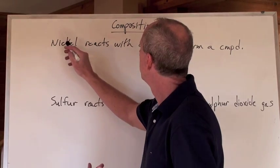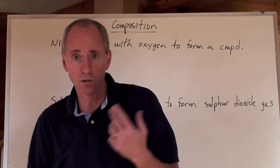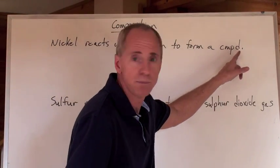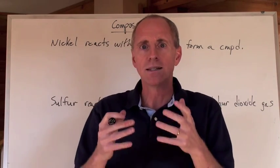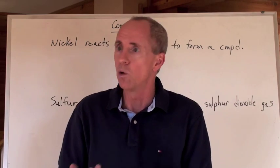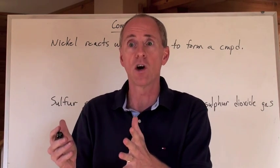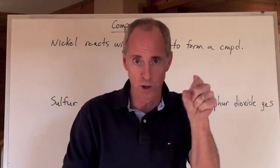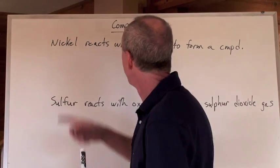Let's do a simple reaction where nickel reacts with oxygen to form a compound. We want to take those two elements and form a compound. So what do we write? We're going to write a formula where we are reacting together things called reactants to produce, on the other side of an arrow, things called products.